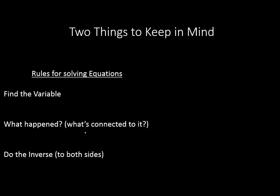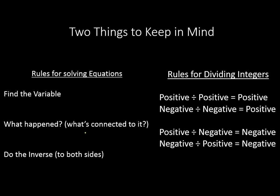So there's two things to keep in mind. One is the rules for solving equations. You find that variable, ask what happened to the variable or what's connected to it, and do the inverse on both sides. Also, we needed to know the rules for dividing integers. A positive divided by a positive gives you a positive. Negative divided by a negative gives you a positive. And then a positive divided by a negative or negative divided by a positive will result in a negative answer. Hope that lesson's been helpful for you. Have a wonderful day.